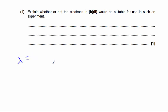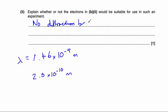but the spacing was around 2.5 times 10 to the power of minus 10 metres. So there's an order of magnitude difference between them. So there will be no diffraction because the spacing or the gap is around 10 times smaller than the wavelength.